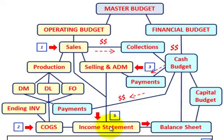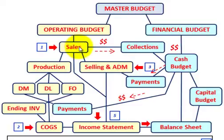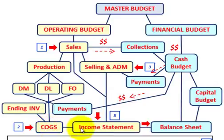We're going to look at what's included in this income statement budget. Directly, we need inputs from our sales budget and our selling and administration budget going into the income statement. We also need our cost of goods sold, which depends on the production budget and all the related budgets — direct materials, direct labor, factory overhead, and ending inventory.